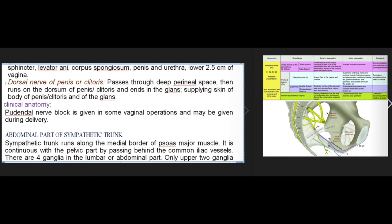(3) Dorsal nerve of penis or clitoris: passes through the deep perineal space, then runs on the dorsum of penis/clitoris and ends in the glans, supplying skin of the body of penis/clitoris and of the glans. Clinical anatomy: pudendal nerve block is given in some vaginal operations and may be given during delivery.